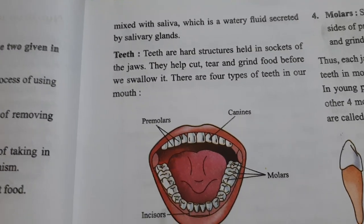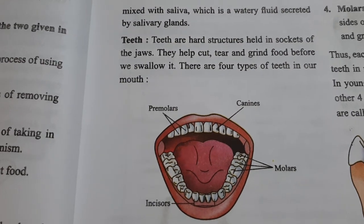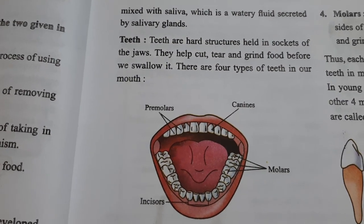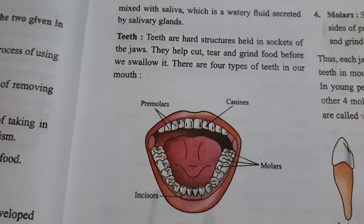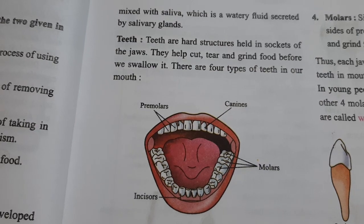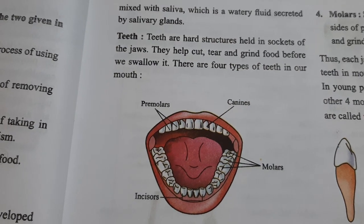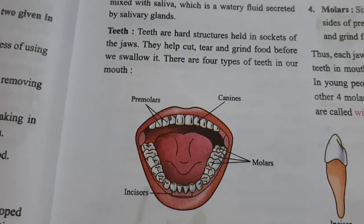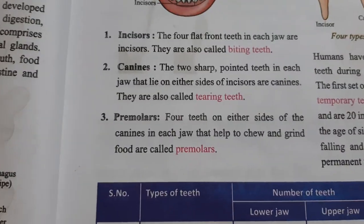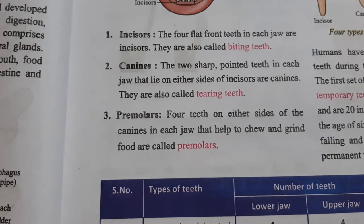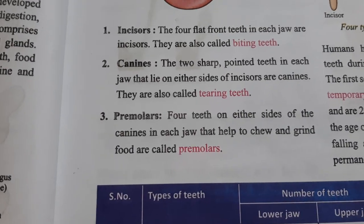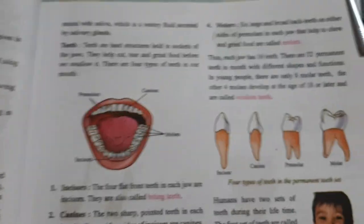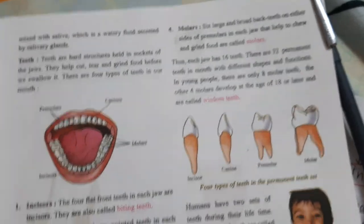Teeth are hard structures in hardened sockets of the jaw. They help cut, tear, and grind food before we swallow it. There are four types of teeth: incisors, canines, premolars, and molars.